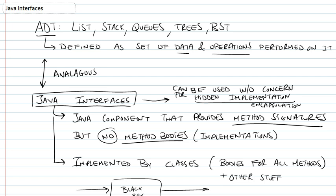Java interfaces are, if you want to think of it this way, an implementation of an abstract data type. So what was an abstract data type again? We remember seeing lists, stacks, queues, trees, binary search trees. These are all abstract data types. They're a set of data and how they're structured and the operations that could be performed in relation to that data.